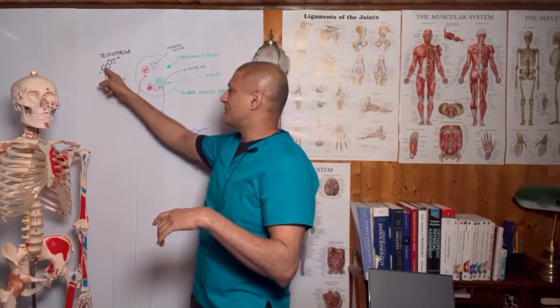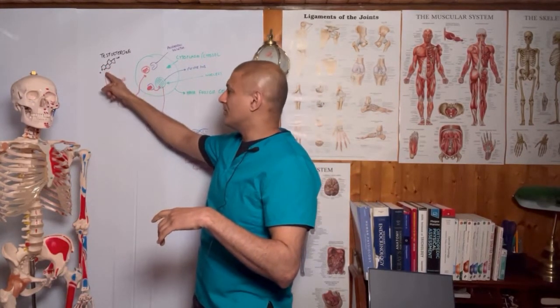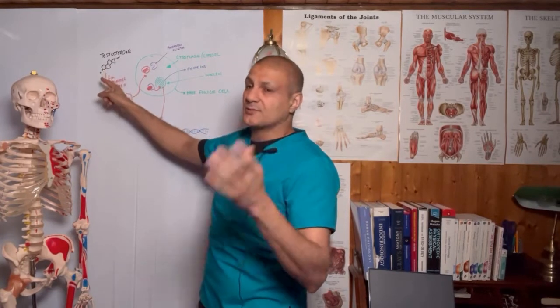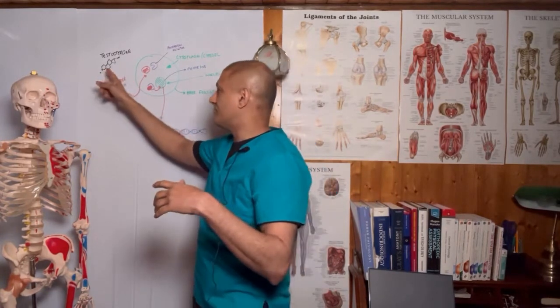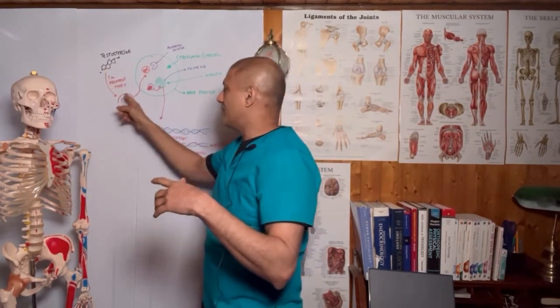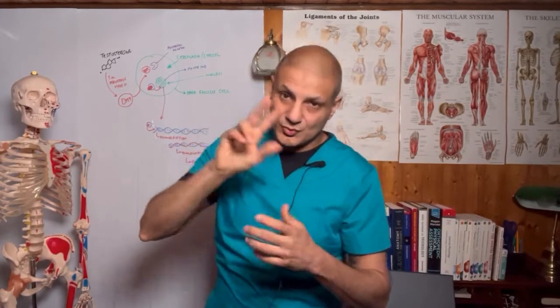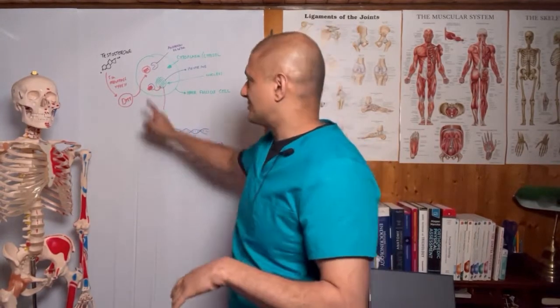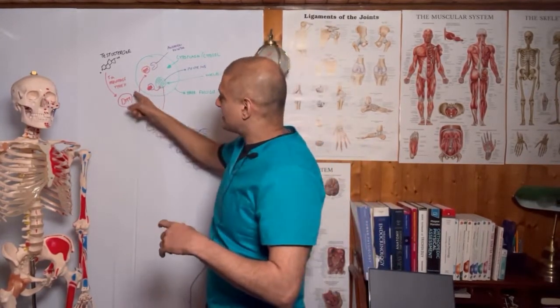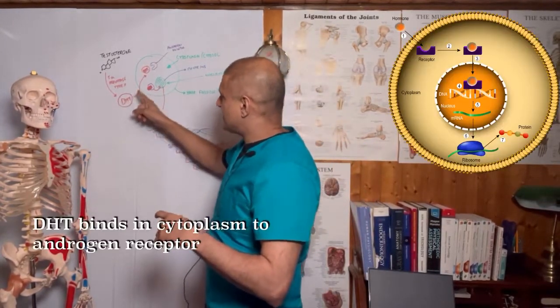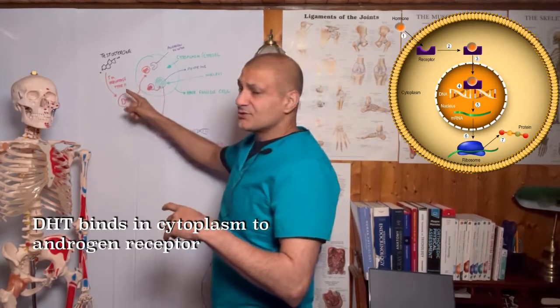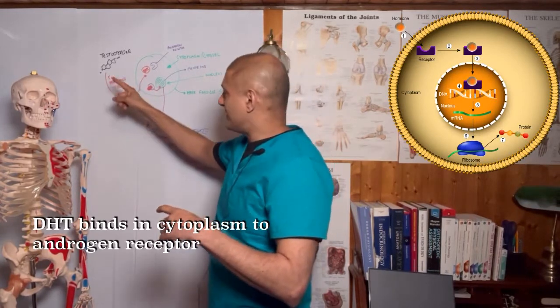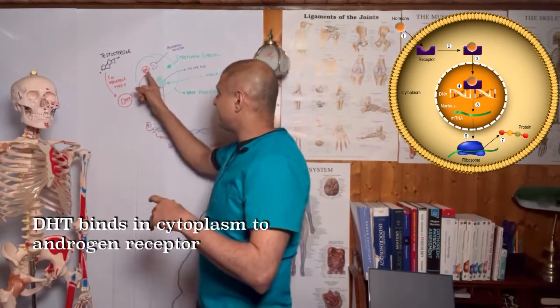This 5-alpha reductase type 2 acts on the double bond in testosterone between carbon number 4 and number 5, and we get the production of dihydrotestosterone. We add two hydrogens to testosterone, producing DHT.